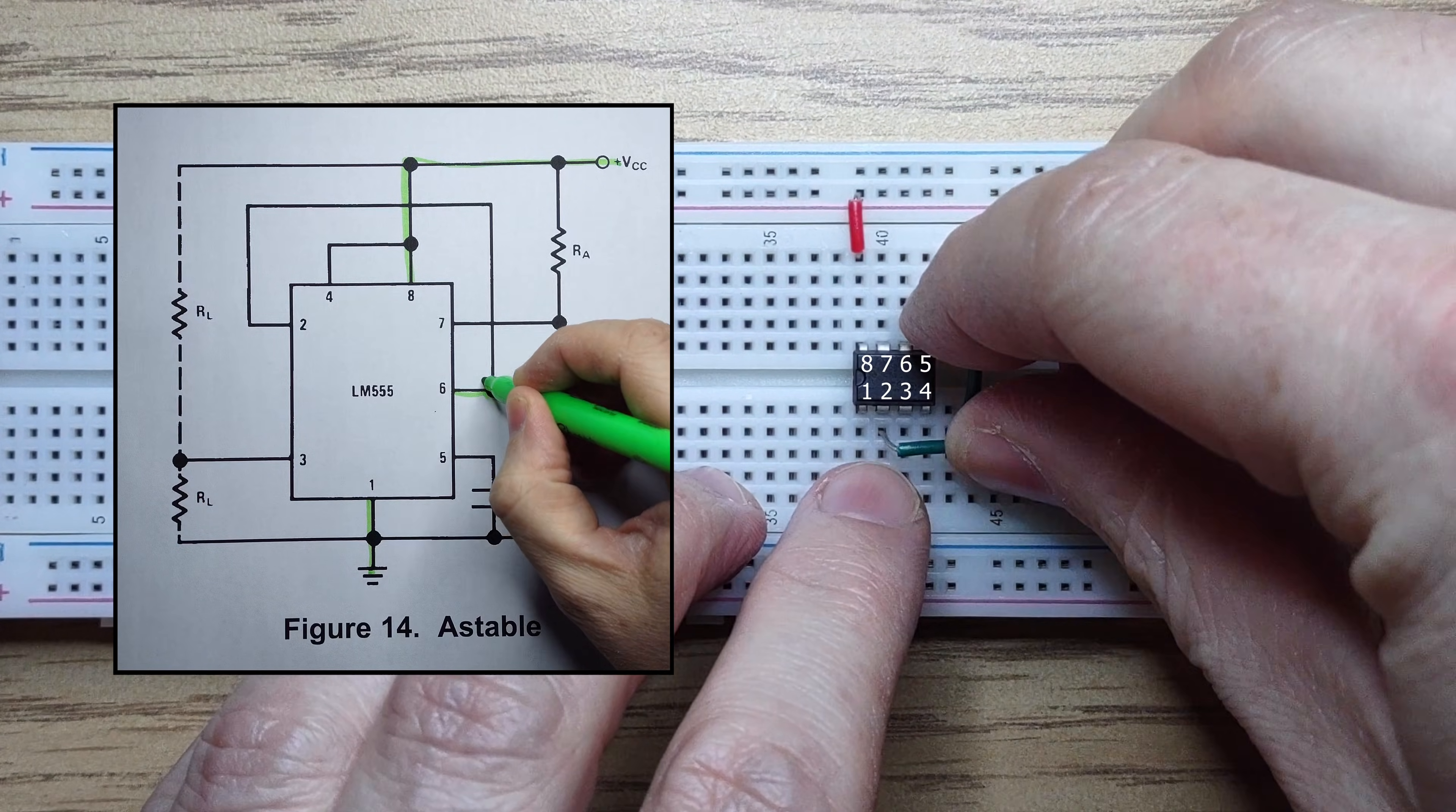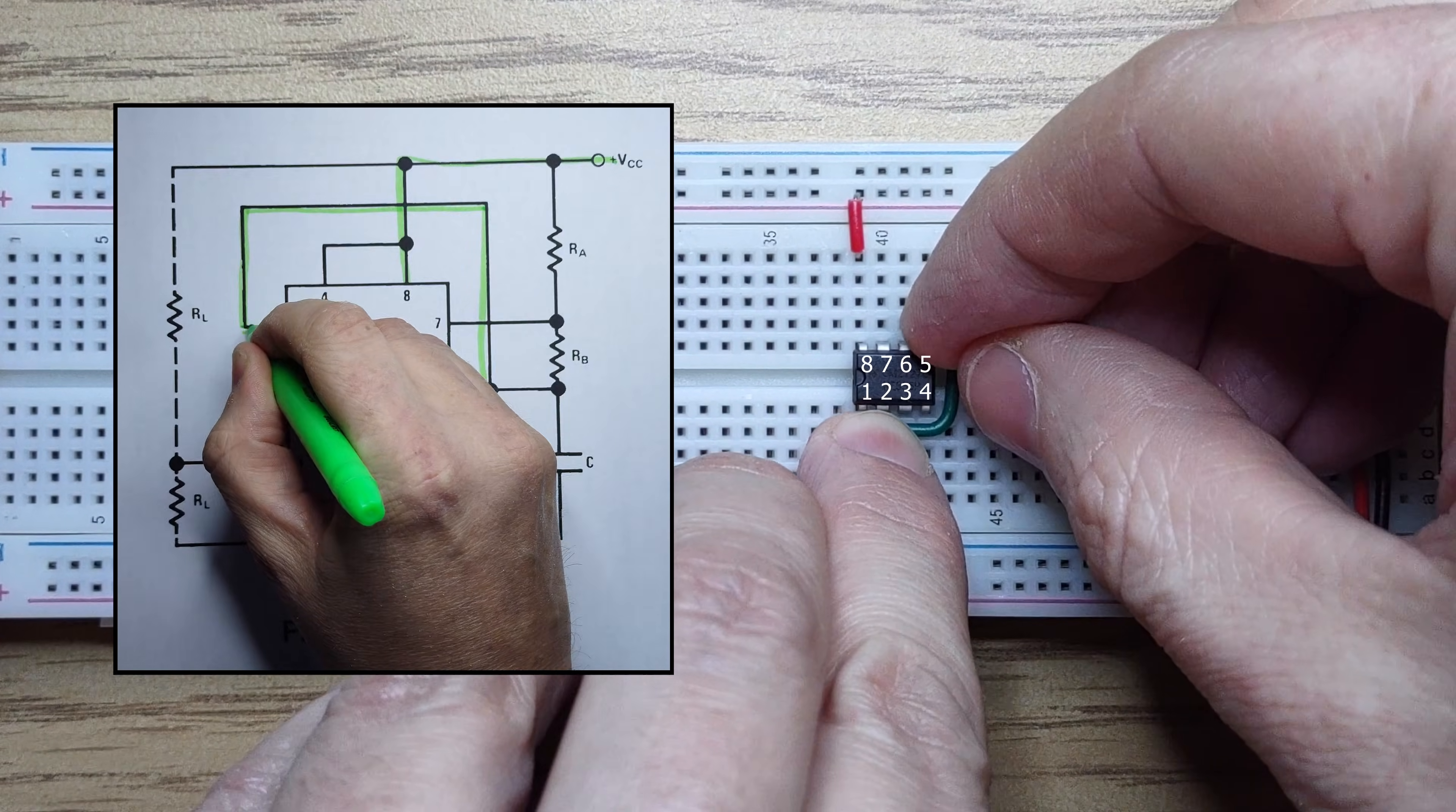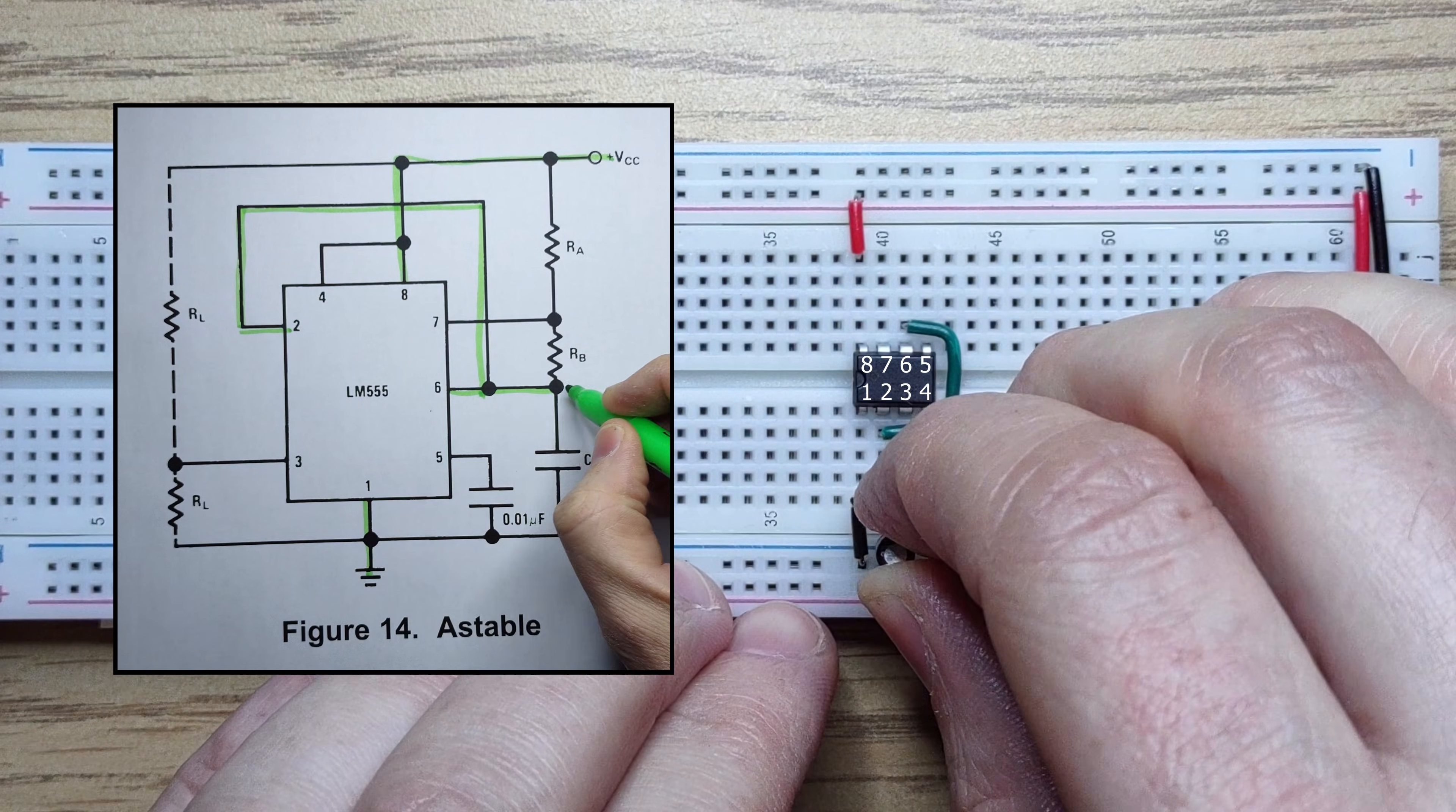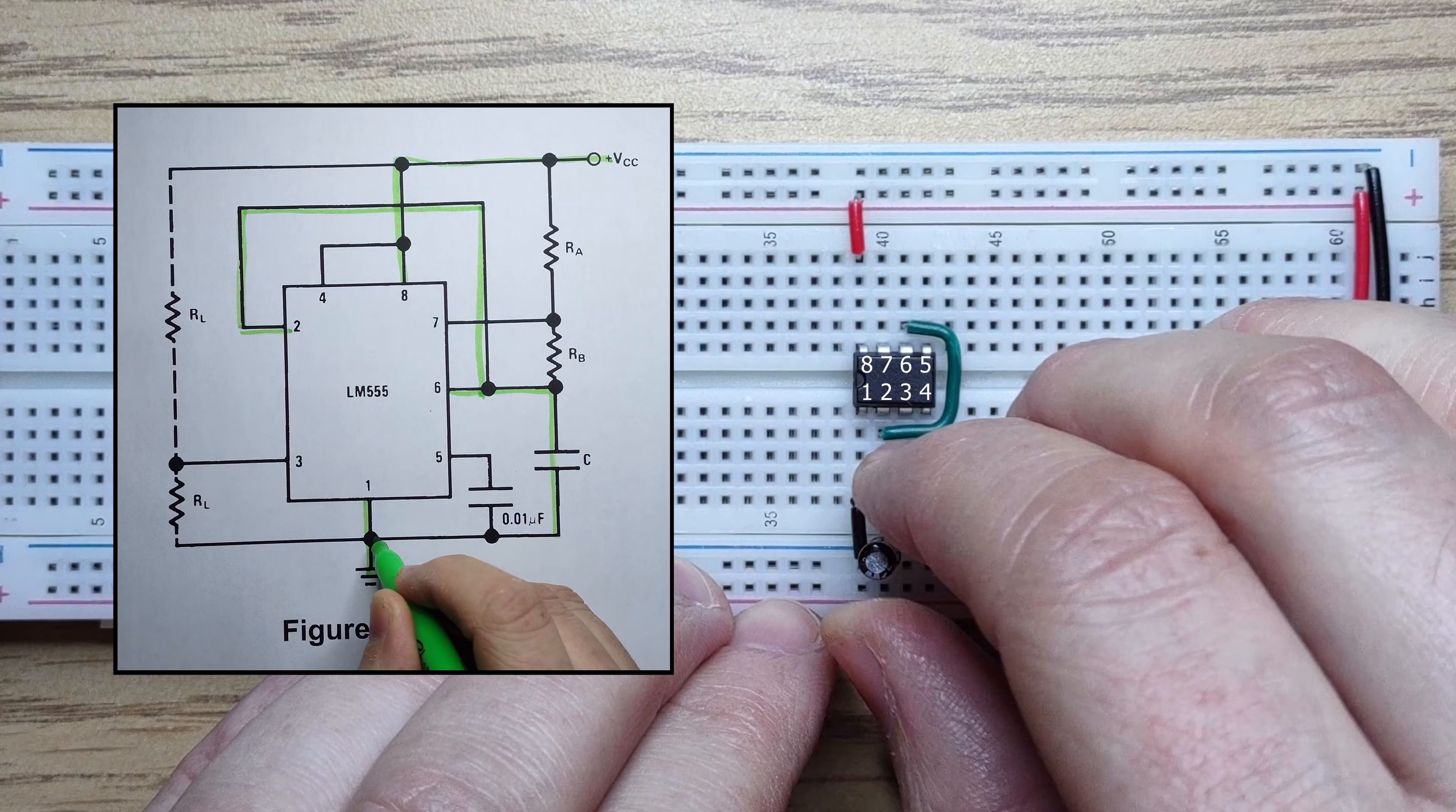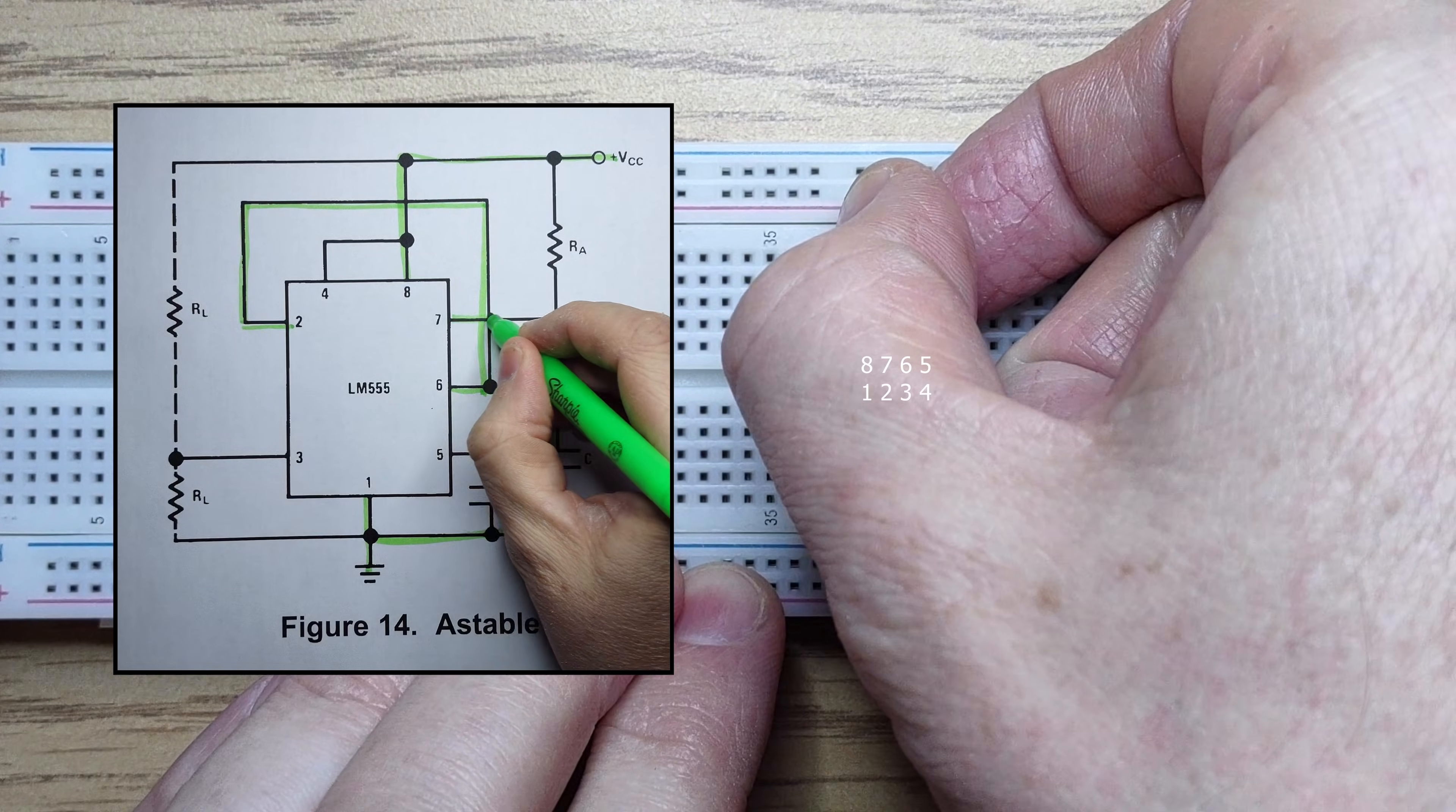We'll connect pin 2 to pin 6 to enable astable operation. We'll add a 10 microfarad capacitor between pin 2 and ground. We'll add a 220 ohm resistor between pin 7 and VCC.